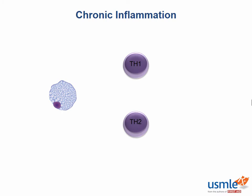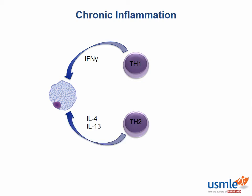Do you recall from immunology what's released from Th1 cells that results in macrophage activation via the classical pathway? That would be interferon gamma. What cytokines are released from Th2 cells that activate macrophages via the alternative pathway? That would be IL-4 and IL-13.